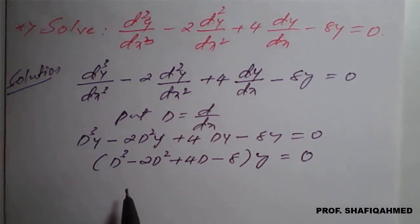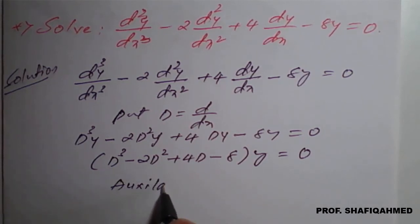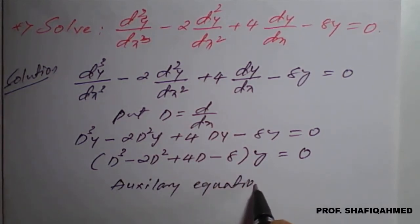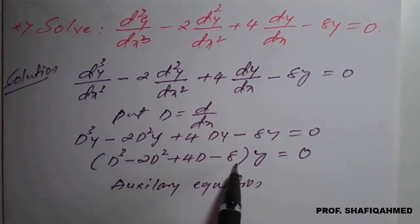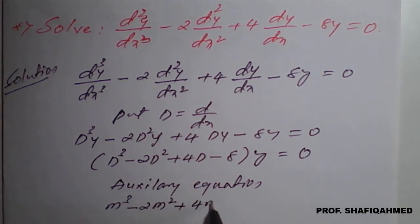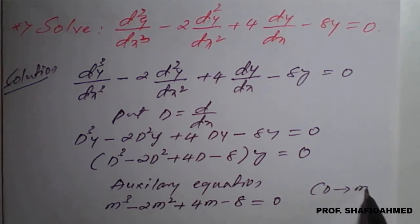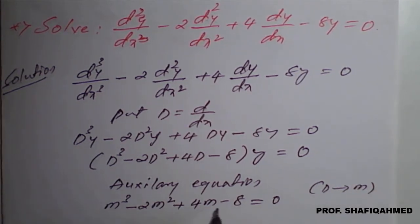The auxiliary equation is formed by replacing D with m. So inside the bracket, every D becomes m: m³ minus 2m² plus 4m minus 8 equals 0. Remember, d/dx is replaced by m in the auxiliary equation.